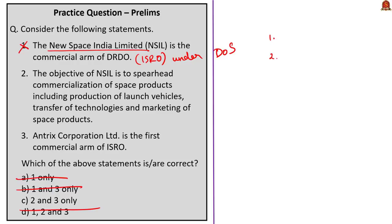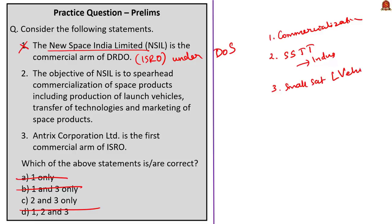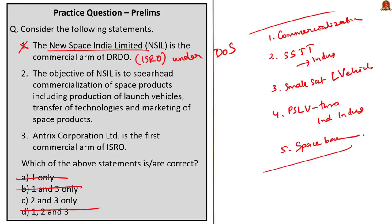NSIL will perform the role of small satellite technology transfer to industries, manufacture small satellite launch vehicles in collaboration with the private sector, produce PSLV launch vehicles through Indian industry, and market space-based products and services, including spin-off technologies both in India and abroad. The second statement: its objective is to spearhead commercialization of space products including production of launch vehicles, technology transfer, and marketing of space products — correct.